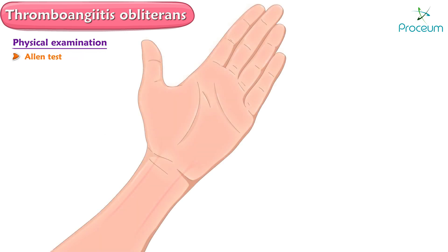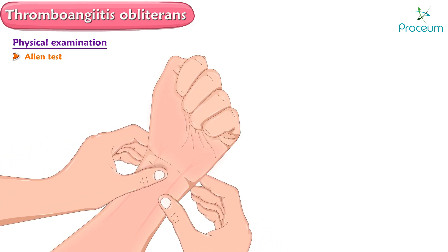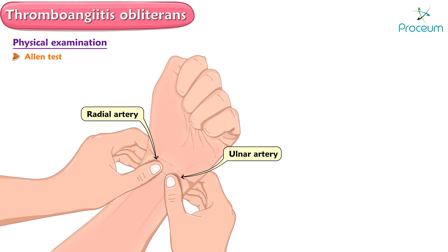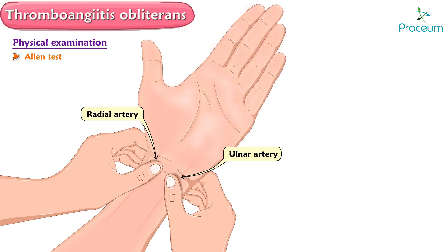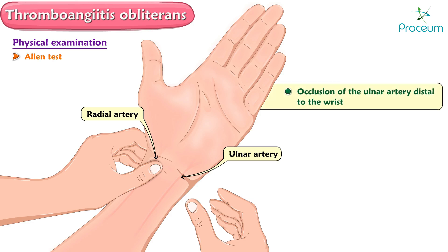An Allen test should also be performed. The patient is instructed to make a fist, which empties blood from the hand and fingers. The examiner's thumbs are pressed across the thenar and hypothenar eminences to the wrist to occlude the radial and ulnar arteries. The patient then opens the hand, making sure not to overextend the fingers. The pressure on the ulnar artery is then released while the radial artery is still compressed. If the hand does not fill with blood, this indicates occlusion of the ulnar artery distal to the wrist.